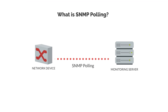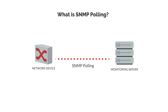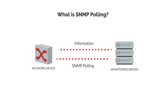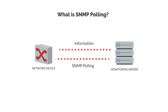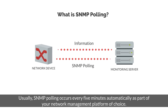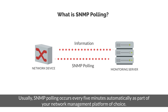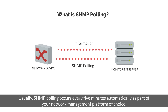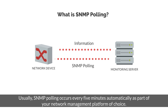SNMP polling is simply network speak for the process described above, when you're polling a network device for information and then the information is returned. Usually, SNMP polling occurs every 5 minutes automatically as part of your network management platform of choice.